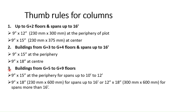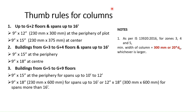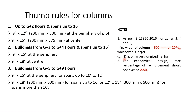We will use these thumb rules for our live project. Please note that as per IS 13920:2016 code for seismic zones 3, 4, and 5, the minimum width of the column is equal to 300 mm or 20 times the bar diameter (dB), whichever is larger. The sizes mentioned should be replaced by this minimum value from that clause. As per IS 456:2000, the maximum percentage of longitudinal reinforcement in columns should not exceed 4%, but for an economical design, we will consider a maximum of 2.5%.